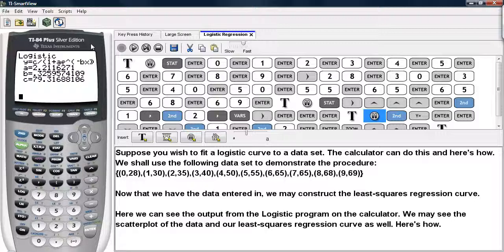Each of these numbers has a specific relationship with the curve itself. c represents what's called the carrying capacity, and we can see the value here is about 79.3.